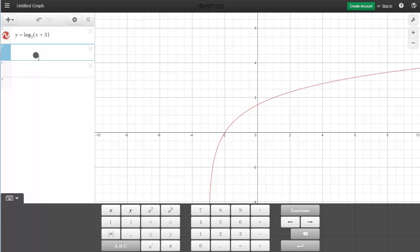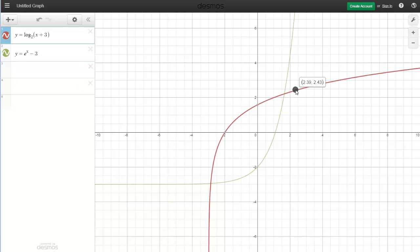The other one is going to be y equals base e raised to the x power. And then we're going to subtract 3 and hit enter. And then all we have to do is trace these graphs to find the points of intersection.